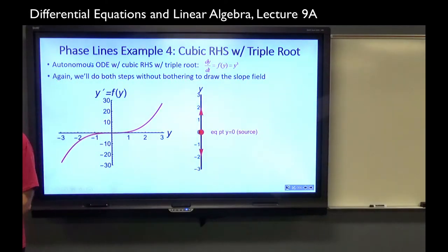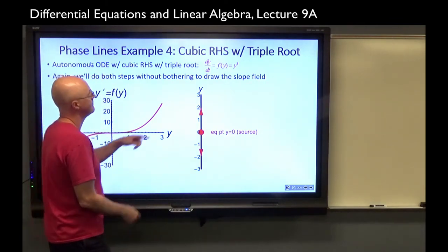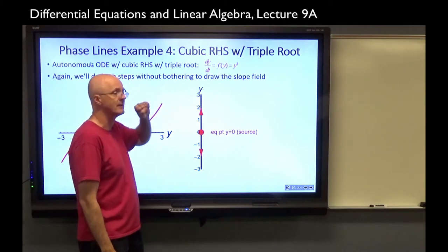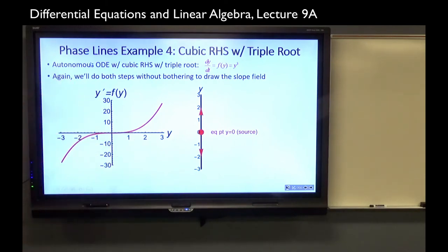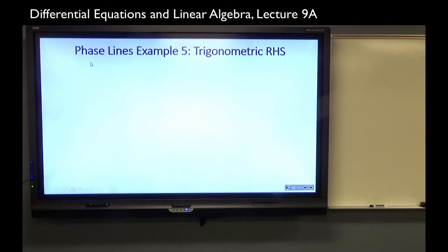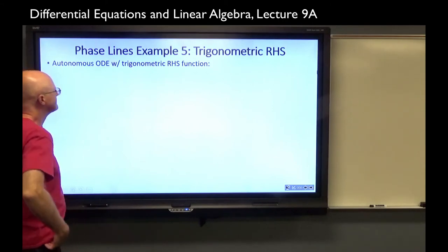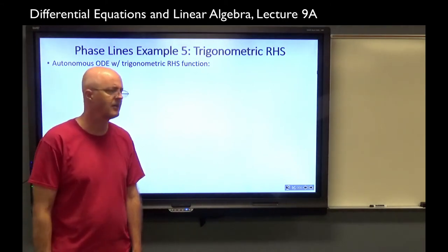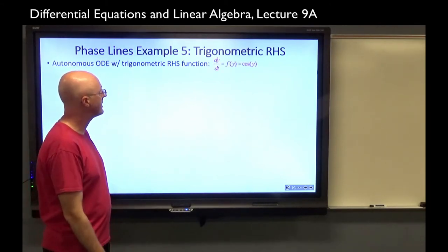If the example were negative y cubed instead of positive y cubed, the graph would be flipped and it would be a weak sink at the origin. Two more things: one more example of a regular phase line, and then we'll introduce the idea of a bifurcation.